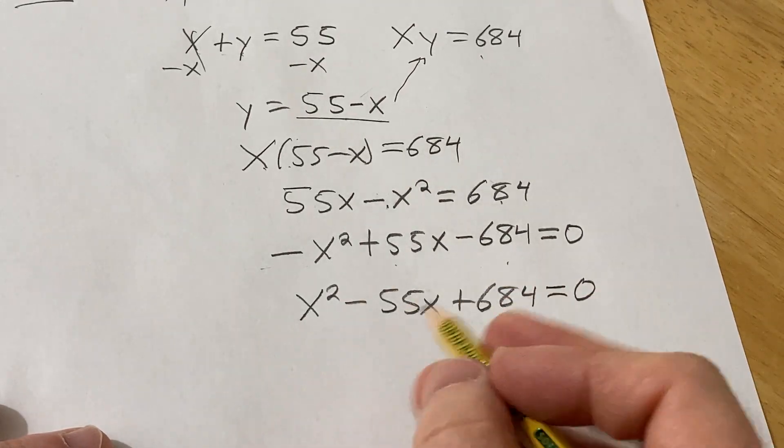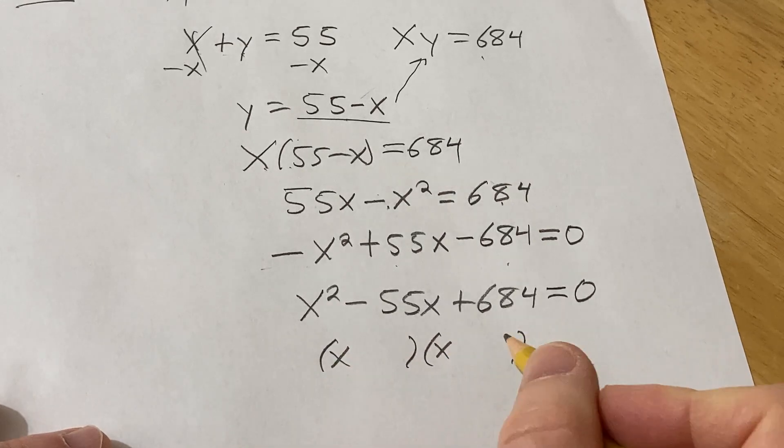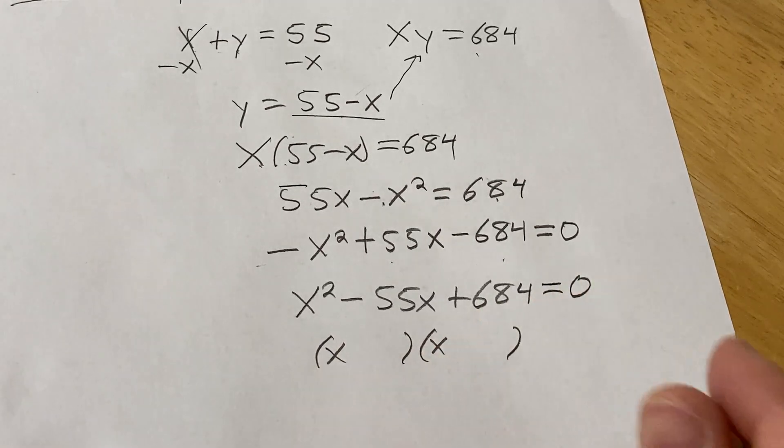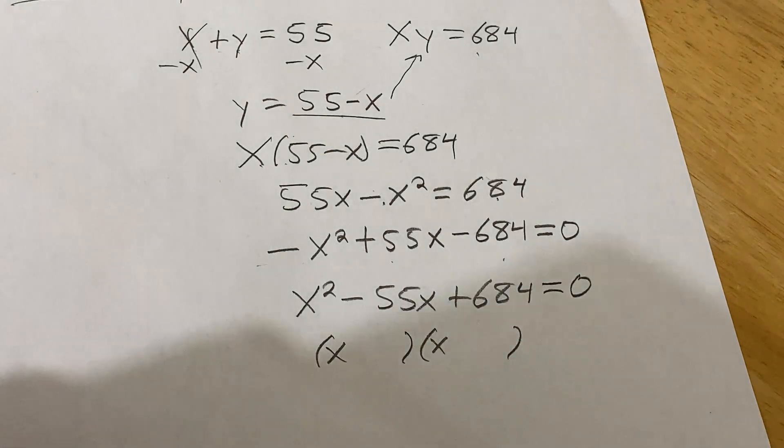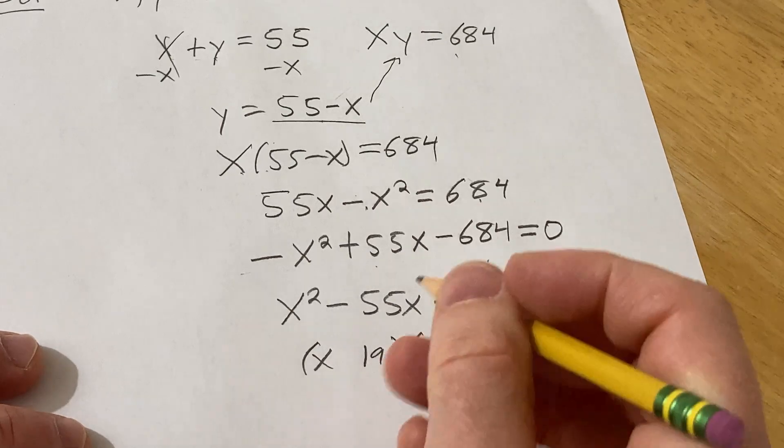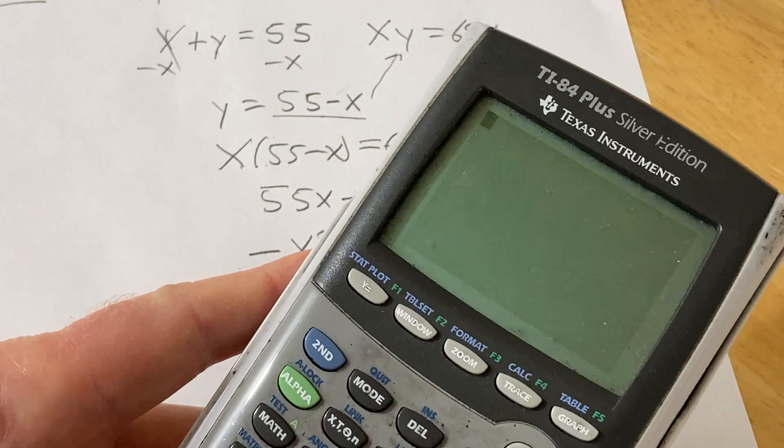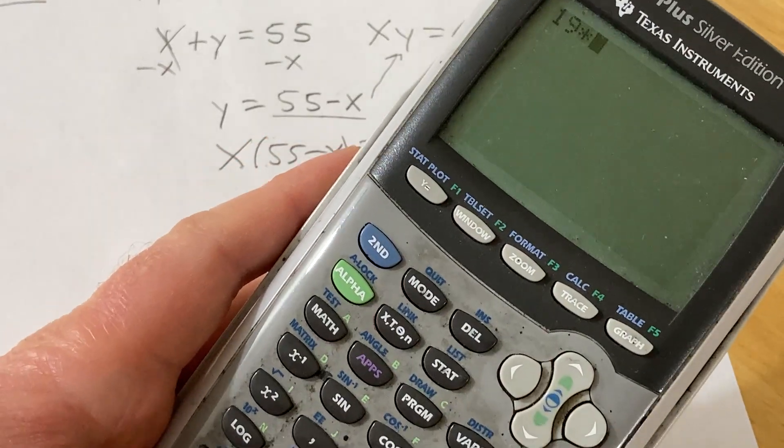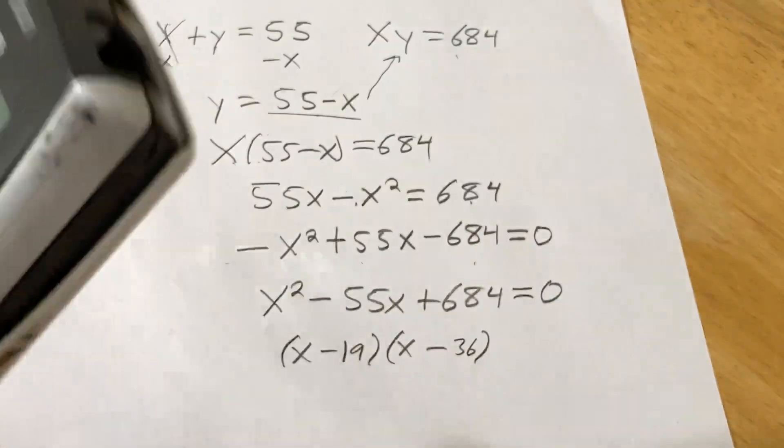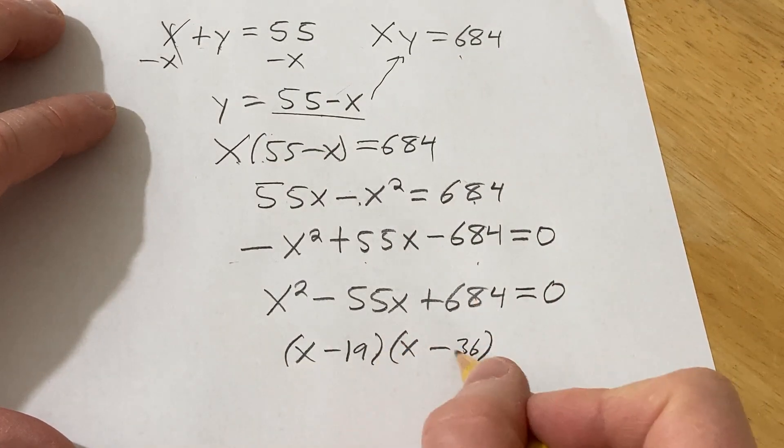Alright, so now we can factor this. We need two numbers that multiply to 684 and add to 55. I think those numbers might be 19 and 36. They definitely add to 55, and they should both be negative. And I'm just going to check with my calculator: 19 times 36 equals 684. So if you multiply this times this, you get this. If you add these, you get the middle term.